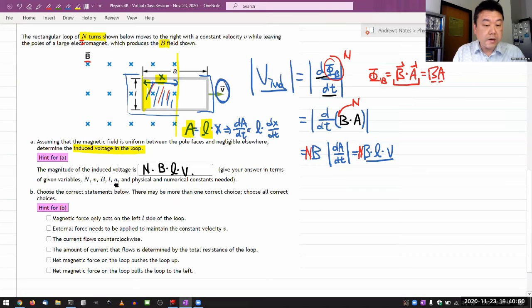Magnetic force only acts on the left L side of the loop. Is that right? I mean, it definitely doesn't act on the right L side. What I want to be careful is, does it act on this top or the bottom? I think it might. Let's see here.